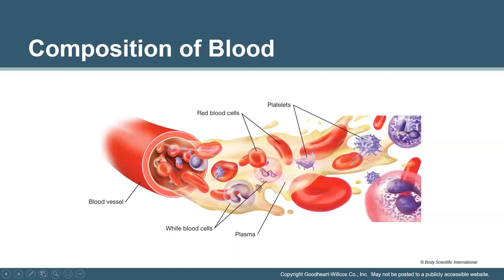When we look at the composition of blood, we have red blood cells or erythrocytes, white blood cells or leukocytes, platelets, and plasma. The solid components of blood are collectively referred to as formed elements, and they include the erythrocytes, the leukocytes, and the platelets. Red blood cells carry oxygen primarily to tissue and carry carbon dioxide away. White blood cells function in protection, and platelets help with clotting.